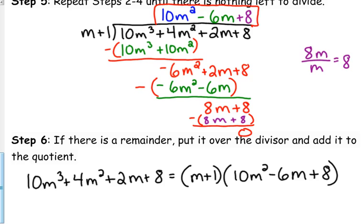m plus 1 times 10m² minus 6m plus 8. Now, we haven't talked about a technique for figuring that out. Our only option right now would be factor by grouping. But it doesn't factor by grouping. But it turns out that it is somewhat factorable here. But I only know that because I divided by m plus 1 and I got the remainder is 0. So that means that m plus 1 is a factor of 10m³ plus 4m² plus 2m plus 8.